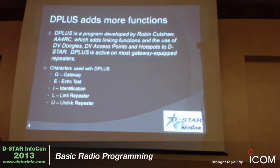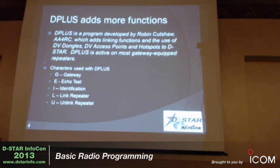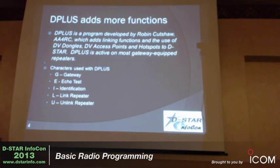Along comes D+, written by a third party — Robin Cutshaw, AA4RC, Internet Labs. D+ is on most repeaters. D+ adds the functionality to first accept DV dongles, DV access points, and other things like hotspots. It also provides the linking functionality to directly link to another repeater or link to a reflector. So we're going to use these characters — G, E, I, L, and U — with functions that we'll be showing.